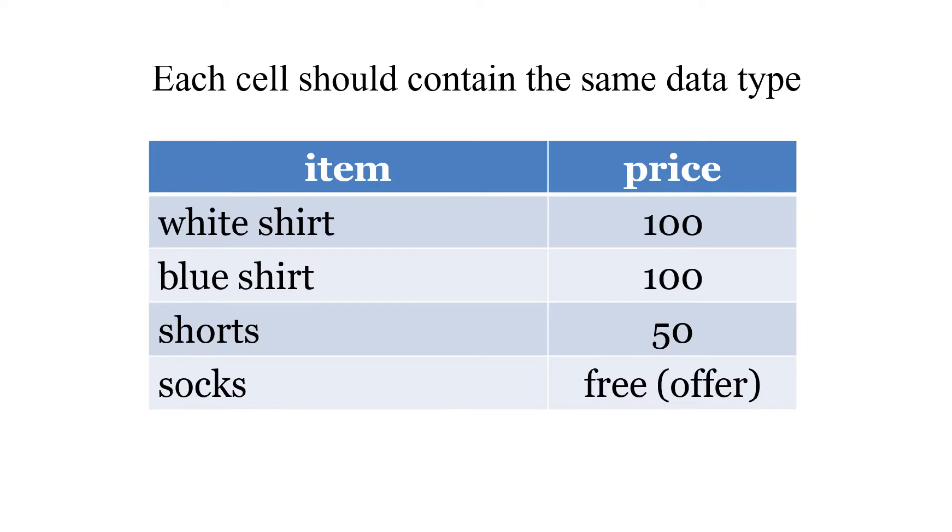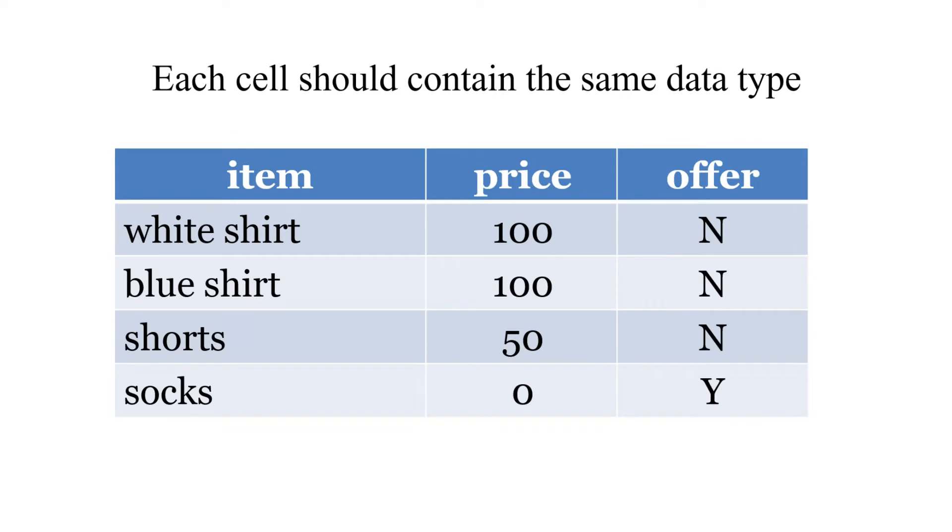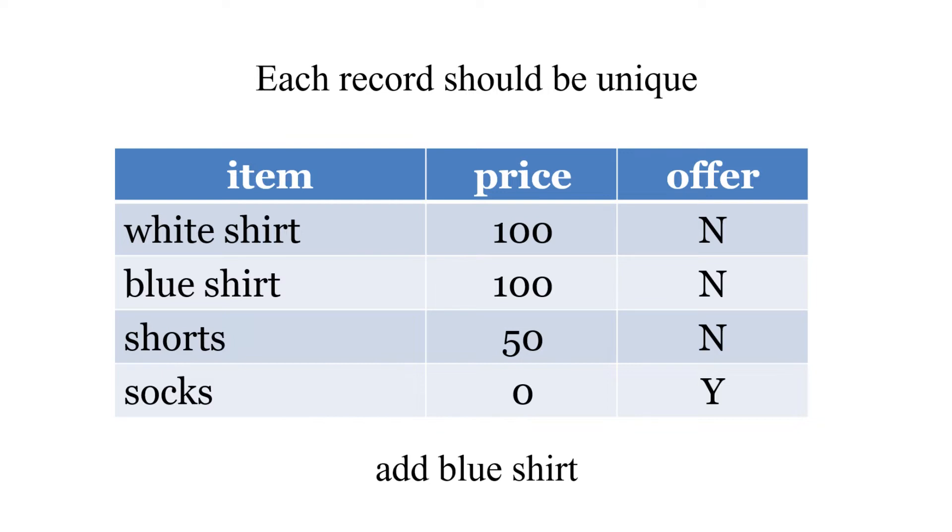Each cell should contain the same data type. Here we can see the price. The bottom one, socks, is free as an offer, so that's not a number. We can change that. Now we've got price, and socks are zero. We've got another column, offer, which is yes or no. Yes would be Y for socks as an offer.